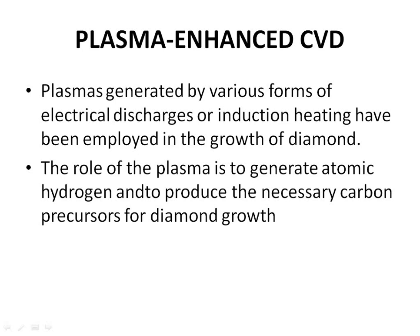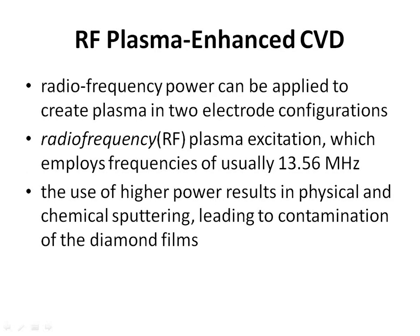RF Plasma Enhanced CVD: Radiofrequency power can be applied to create plasma in two electrode configurations. RF plasma excitation employs frequencies of usually 13.56 MHz. The use of higher power results in physical and chemical sputtering, leading to contamination of the diamond films. DC Plasma Enhanced CVD: Plasma in a H2-hydrocarbon mixture is excited by applying a DC bias across two parallel plates, one of which is the substrate. This enables coating of large areas and the potential for very high growth rates, but films can contain high concentrations of hydrogen and impurities from plasma erosion of the electrodes.